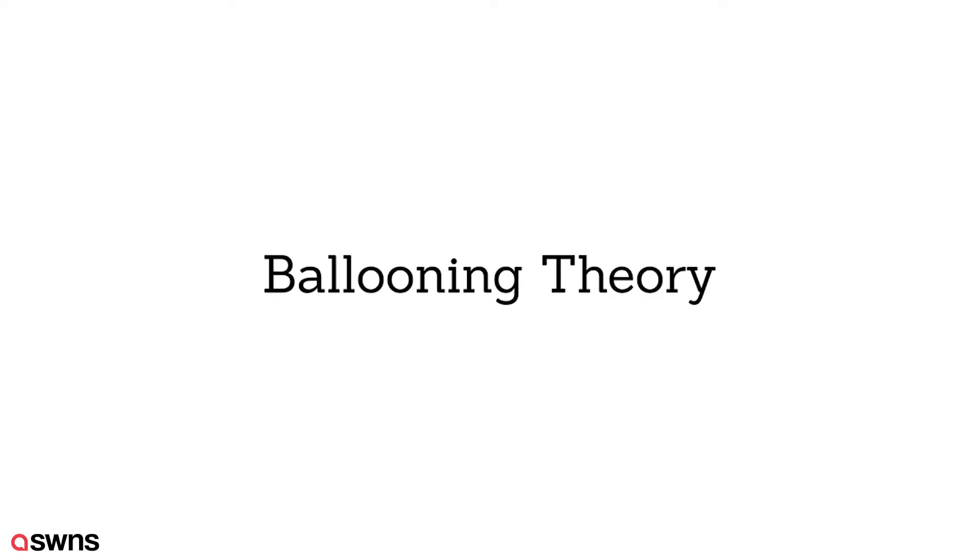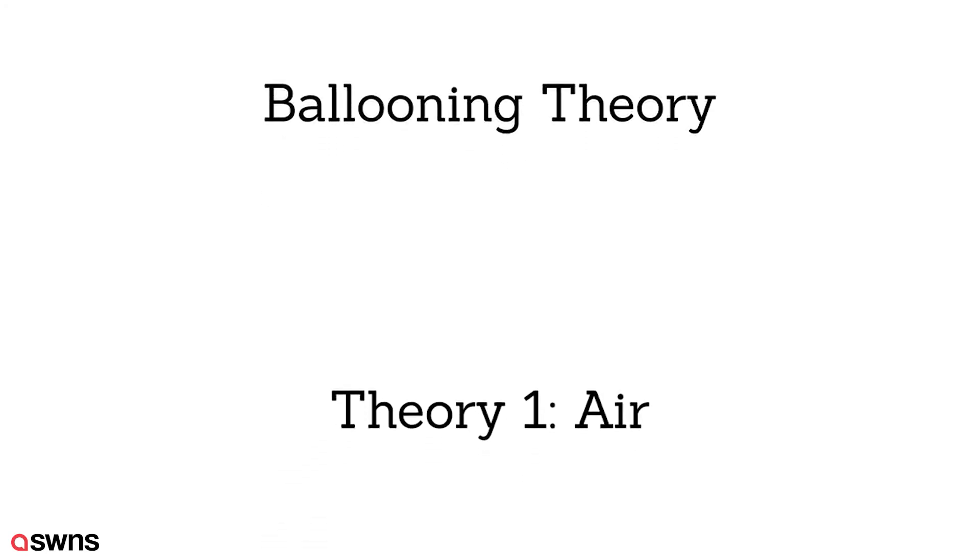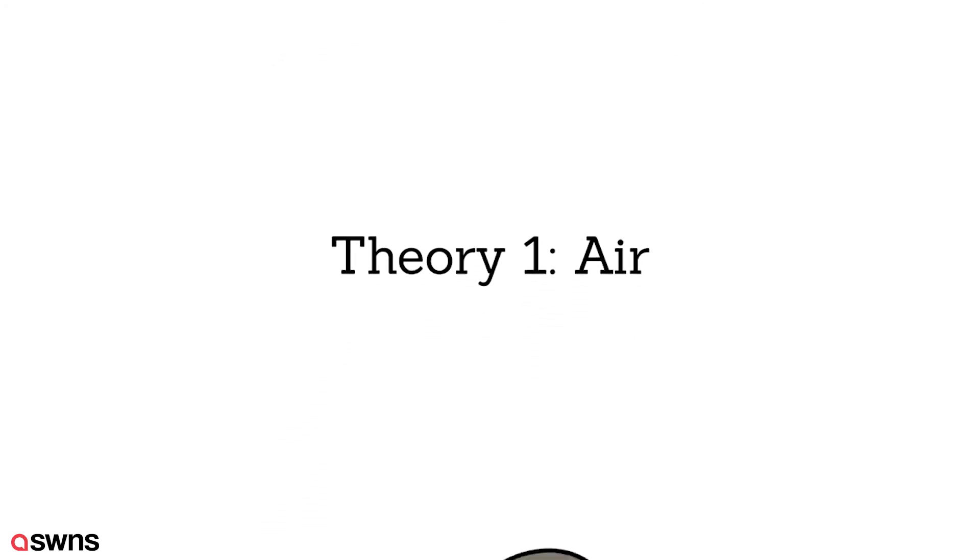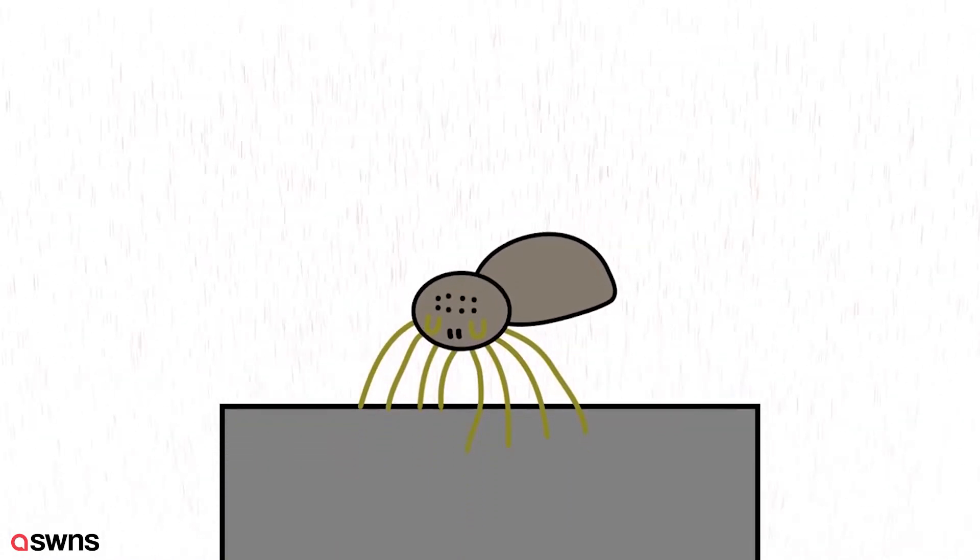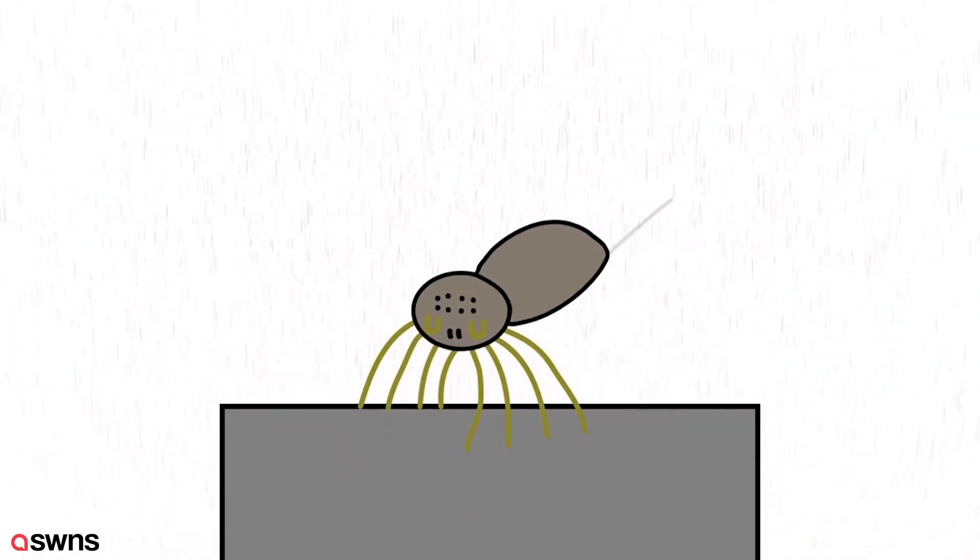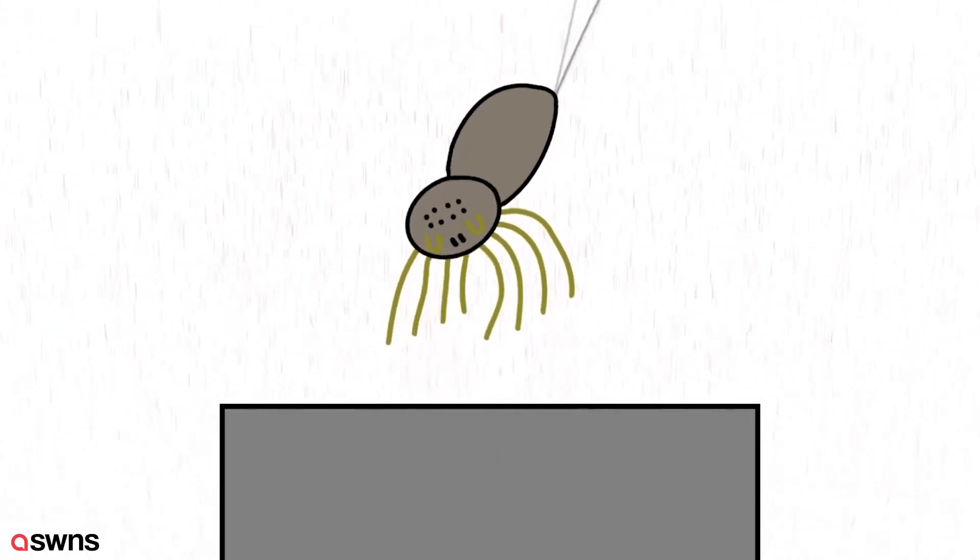During this time there were two theories for how ballooning worked. The first theory and the most obvious explanation was that long strands of silk emitted by the spider catch the wind and the associated drag forces pull the spider aloft.